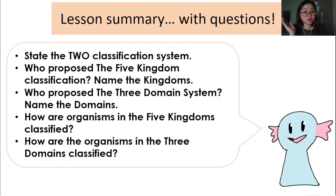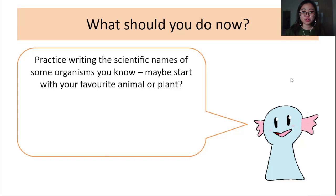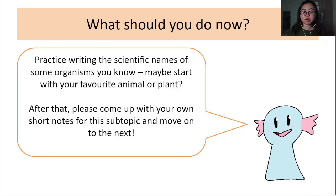Are you able to answer all of these questions? If yes, good job. If not, it's time to have a look at the notes once again. So we're done with 1.1. Now you should practice writing the scientific names of some organisms you know — maybe you can start with your favorite animal or plant. Try to Google the scientific name for it. After that, please come up with your own short notes for this subtopic and move on to the next one. That's it for 1.1. I hope to see you again in 1.2. Bye!